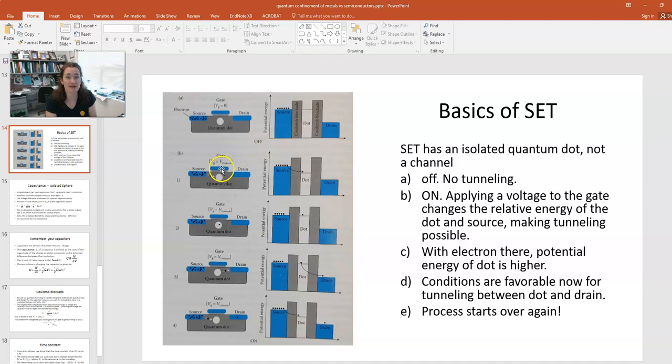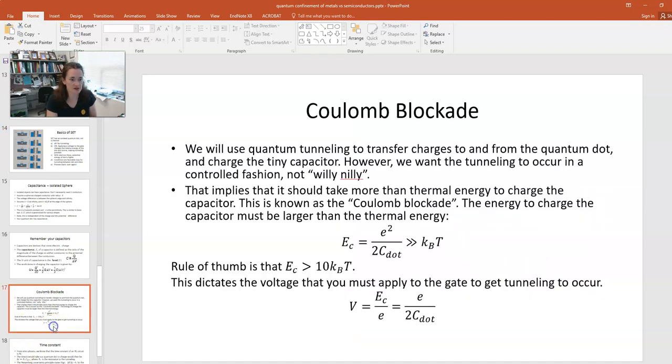Now, how do we know what that is? First, we want it to take more than thermal energy to charge the capacitor. That's the Coulomb blockade, which is this gray barrier here in between the source and the dot. That's the potential energy that we want to stand in the way of uncontrolled tunneling. So we want this energy to be large enough so that it's a formidable enough barrier so that tunneling doesn't occur until we apply the voltage to the gate. So in order to do that, we want our energy to be much greater than kT,